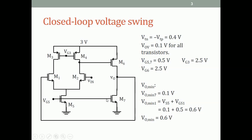VG5 is connected to M7 also, so VG7 is 0.5 V. VG3 is 3 minus 0.5 = 2.5 V, and we assume the gate of M6, which is the drain of M4, is also at 2.5 V. This is a high-impedance node and the exact DC voltage cannot be determined without what is called common-mode feedback, which we will discuss later. For now we assume it is 2.5 V.